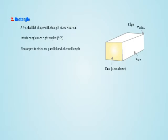2. Rectangle: A flat shape with straight sides where all interior angles are right angles. Also opposite sides are parallel and of equal length. Example: A square is a special type of rectangle.